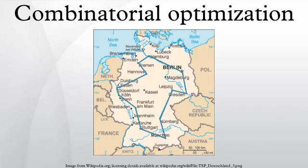Some research literature considers discrete optimization to consist of integer programming together with combinatorial optimization, although all of these topics have closely intertwined research literature. It often involves determining the way to efficiently allocate resources used to find solutions to mathematical problems.